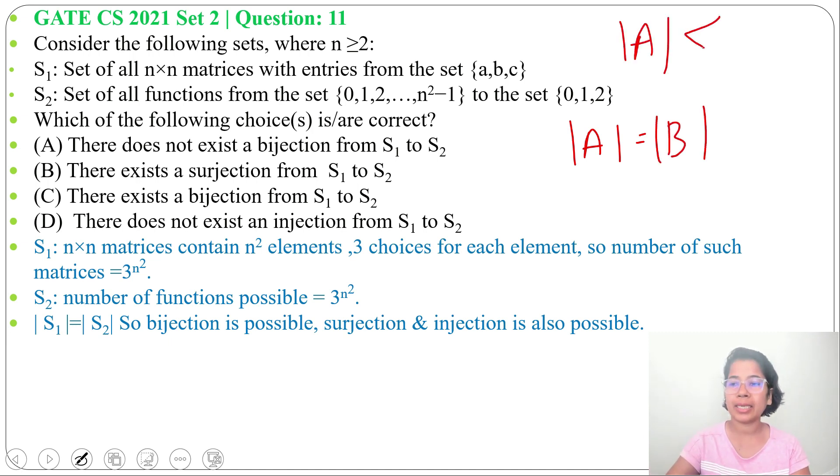If |A| is less than or equal to |B|, then one-to-one is possible. If |A| is greater than or equal to |B|, then onto is possible. If both cardinalities are equal, then bijection or you can say one-to-one correspondence is possible.